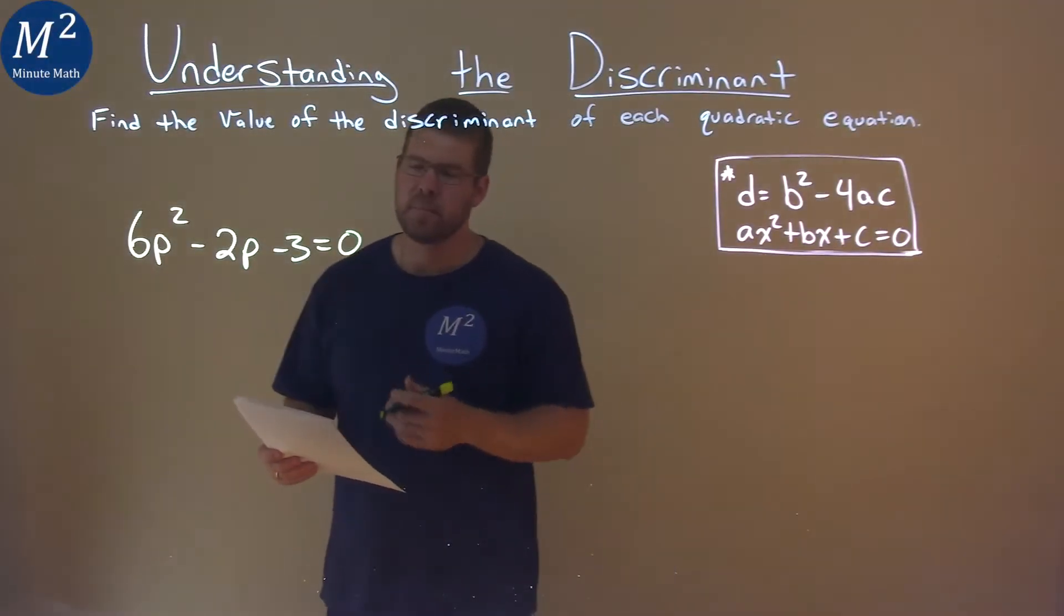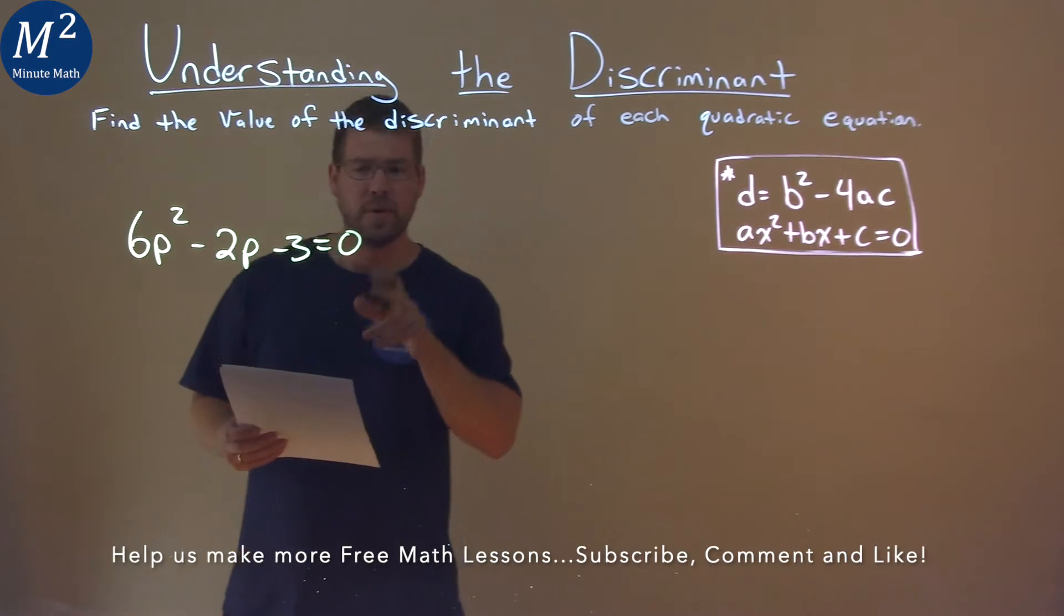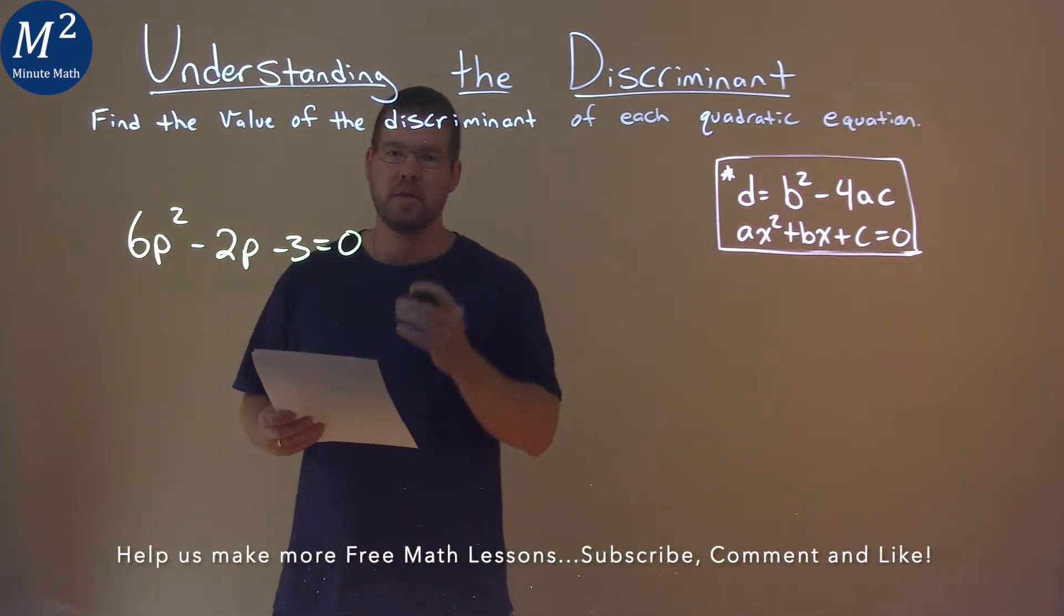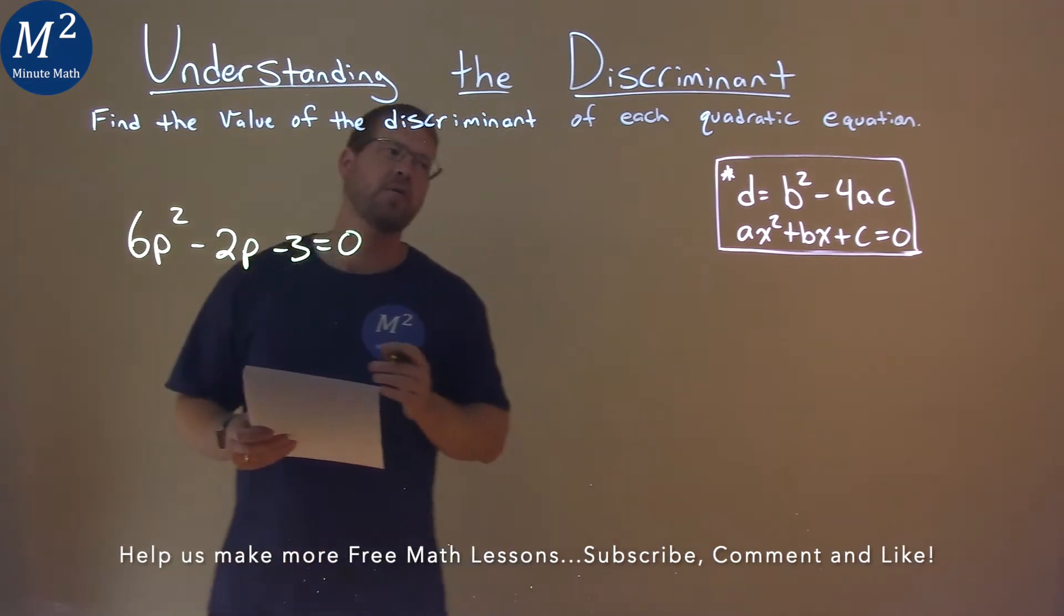We're given this problem right here: 6p squared minus 2p minus 3 equals 0, and we need to find the discriminant. We use our formula right there.